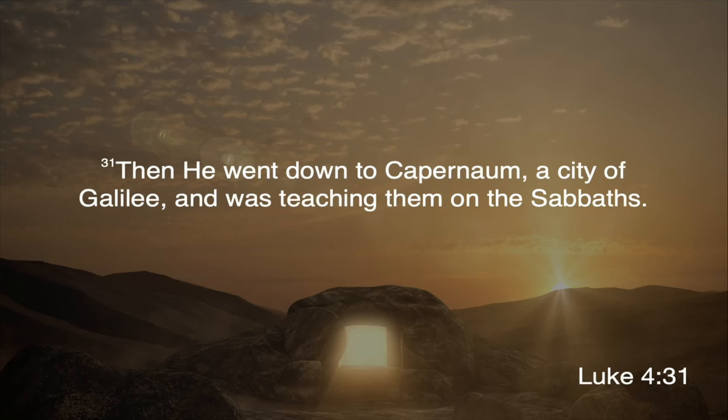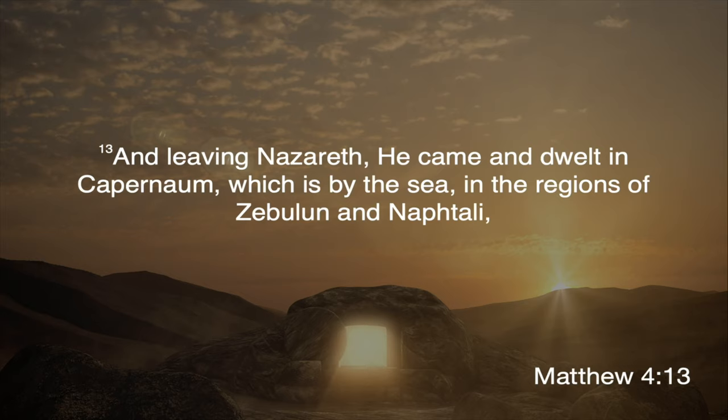Continuing in Luke, we read where Jesus headed next. Verse 31 of chapter 4: 'Then he went down to Capernaum, a city of Galilee.' We also see this in Matthew 4:13, which says, 'And leaving Nazareth, he came and dwelt in Capernaum, which is by the sea, in the regions of Zebulun and Naphtali.' The sea mentioned here is, of course, the Sea of Galilee.